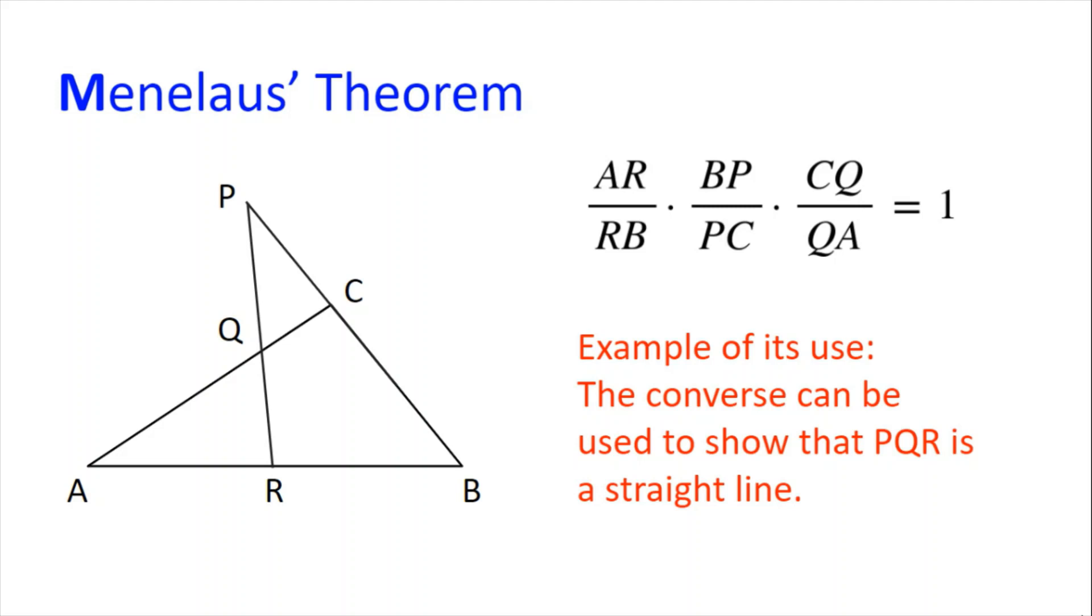Next, we have M for Menelaus's theorem. This states that AR divided by RB multiplied by BP divided by PC multiplied by CQ divided by QA is equal to 1 if and only if PQR is a straight line. The converse is also true and can be useful to show that PQR is a straight line.